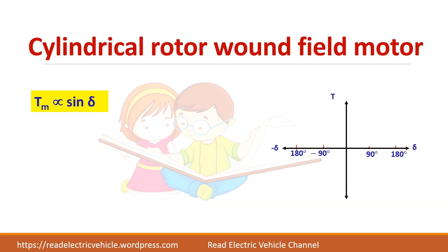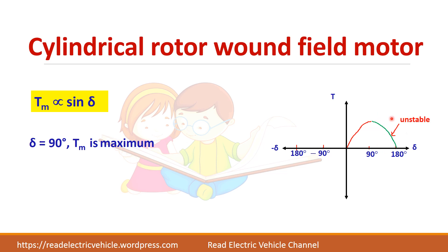If we plot the graph between torque and torque angle, as the torque angle increases, the torque increases until 90 degrees, where it reaches its maximum value. After 90 degrees, if you increase the torque angle further, torque starts to decrease — this region is the unstable region. It is always desirable to operate in the 0 to 90 degree region, which is the motoring mode. Similarly, plotting for negative angles gives the braking or regenerative braking mode.